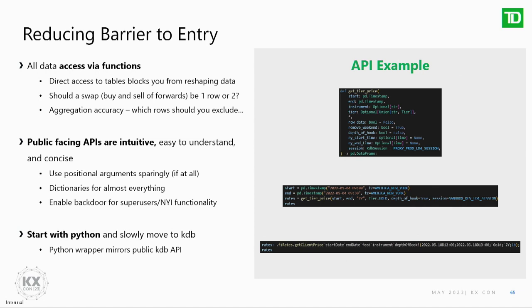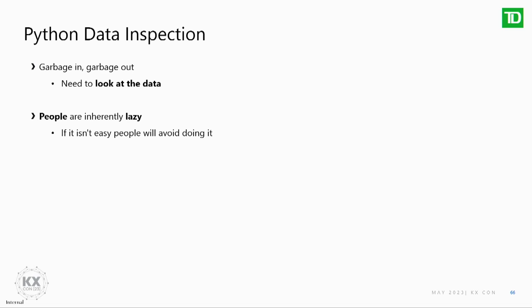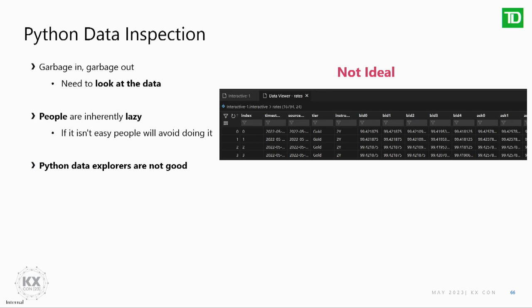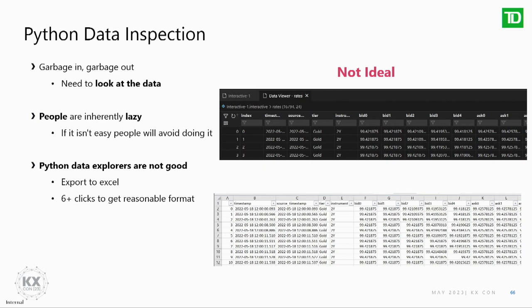Switching gears a bit — this is more of a gripe for me with Python. When it comes to data science, garbage in, garbage out is one of the most important things, and in order to do this you need to look at the data. Generally speaking, people are lazy — if it's not easy to look at the data, people are going to avoid doing it; if it's not easy to run a unit test, people won't run the unit tests. If I open up Jupyter Notebook-style in VS Code, the table I get out doesn't even show the timestamps. So I copy and paste to Excel — it takes a number of clicks and it's painful. These frictions add up really quickly.